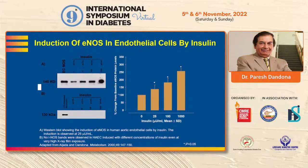An experiment from our own lab showed that eNOS — endothelial nitric oxide synthase, the enzyme that makes nitric oxide — is increased in a dose-dependent fashion when incubated with different doses of insulin. You can see the Western blot on the left and the graphic histogram on the right.